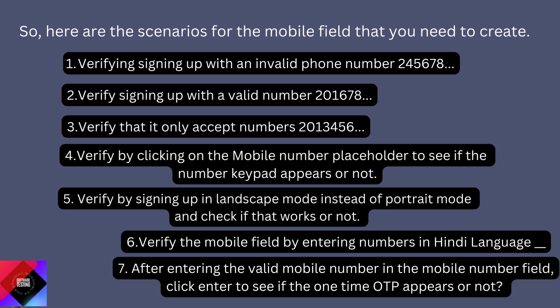Here are the scenarios for the mobile number field that you need to create. First, verify signing up with an invalid phone number, for example 245678, etc. Second, verify signing up with a valid phone number, for example 201678, etc. Third, verify that it only accepts numbers, not any characters or symbols. Fourth, verify by clicking on the mobile number placeholder to see if the number keypad appears or not. Fifth, verify by signing up in landscape mode instead of portrait mode and check if that works or not.